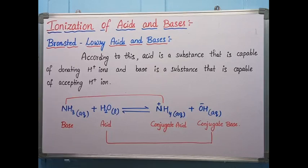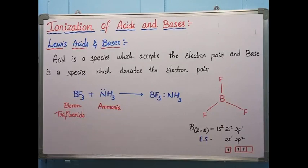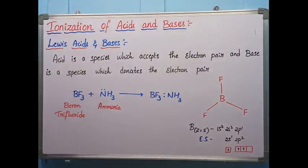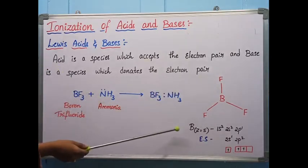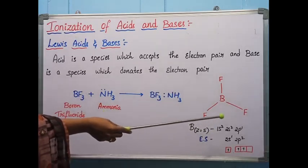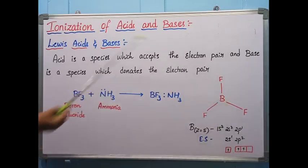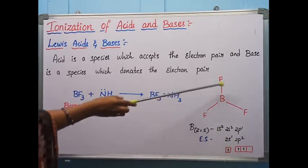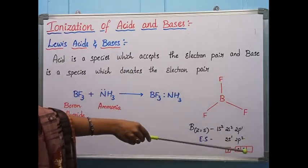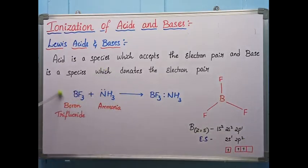Now let us see about Lewis acids and bases. According to Lewis, an acid is a substance or species which accepts an electron pair, and a base is a substance or species which donates an electron pair. For example, BF3 (boron trifluoride) and ammonia: boron has atomic number 5 and electronic configuration 1s² 2s² 2p¹. In the excited state, one electron from 2s jumps to 2p, giving 3 unpaired electrons that bond with 3 fluorine atoms forming a trigonal planar structure. BF3 still has a vacant orbital to accept electrons from ammonia, so it is called a Lewis acid, and ammonia, donating electrons, is called a Lewis base.